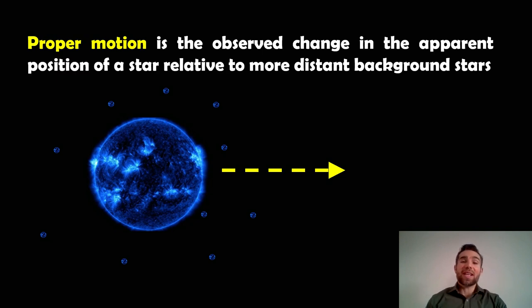So what is proper motion? Well, as we look at a star, it's the observed change in the apparent position of a star relative to more distant background stars, basically. So if we look at a star and it moves relative to those background stars. The reason for that is it's probably quite close to us, it's closer than those background stars. And it's got very high relative motion, actually. So its proper motion is going to be quite high.